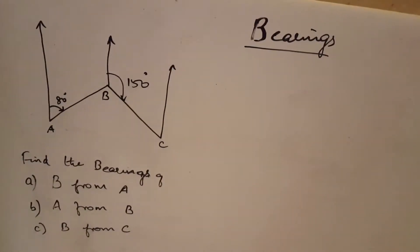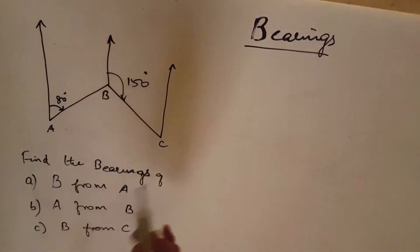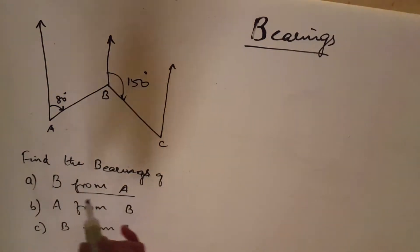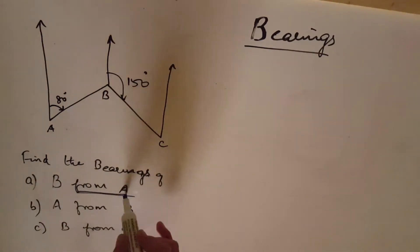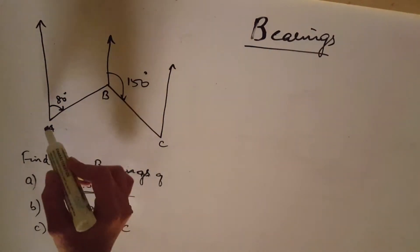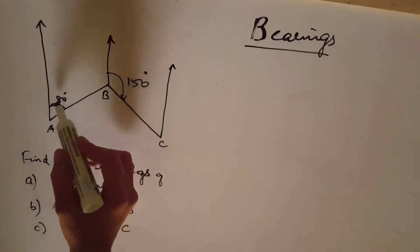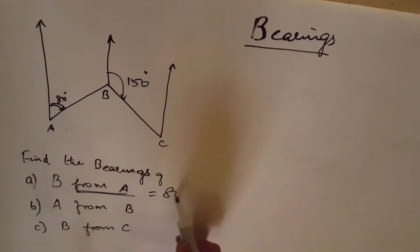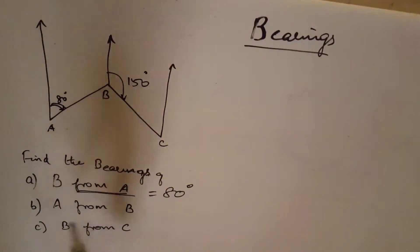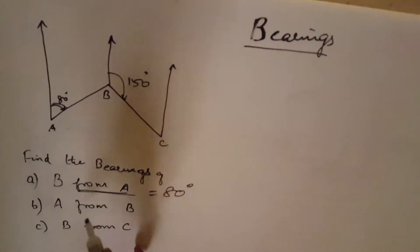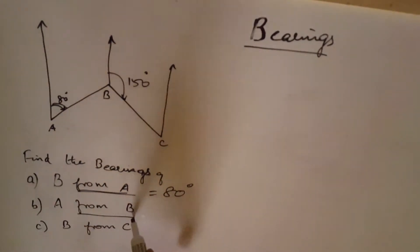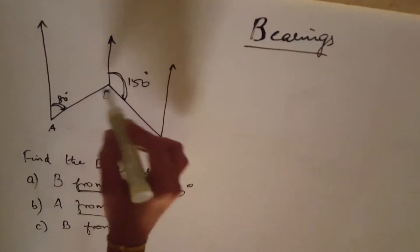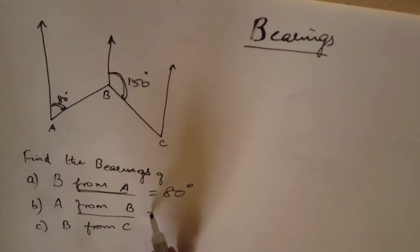In this question, we will see: find the bearing of — first one is B from A. B from A is from A, so 80 degrees. A from B — from B is this one — A from B, so 150 degrees.